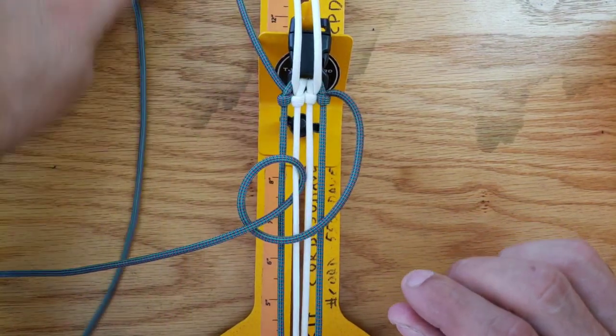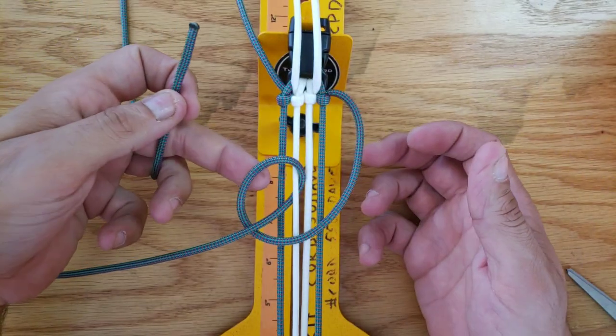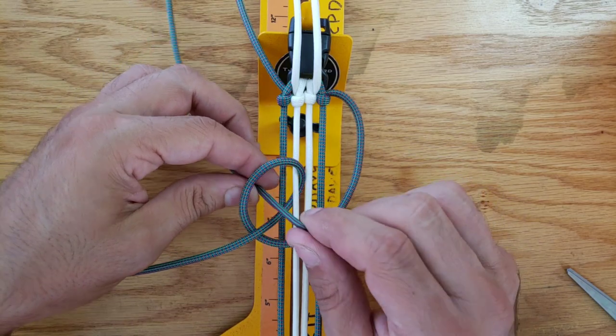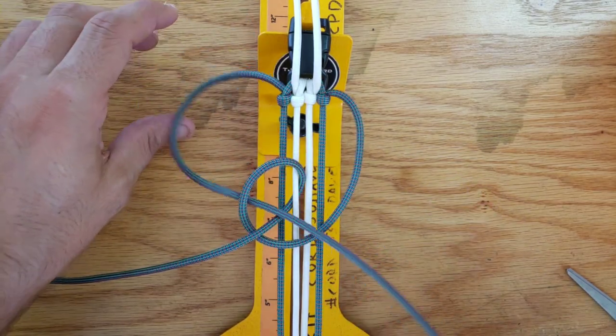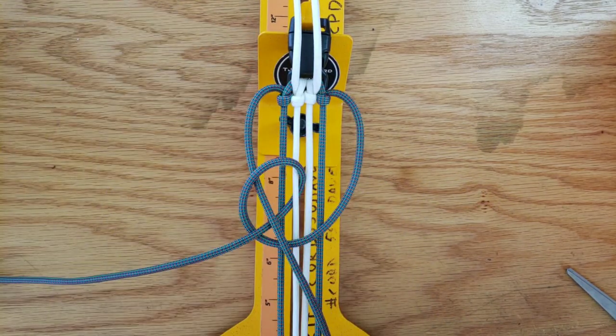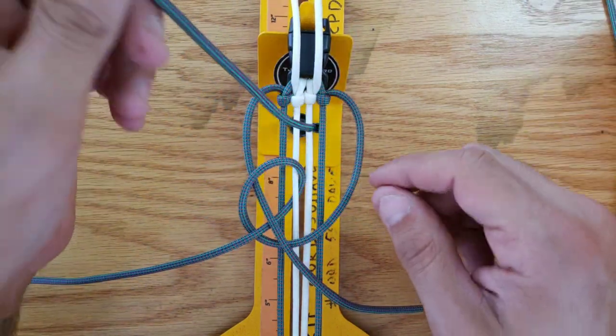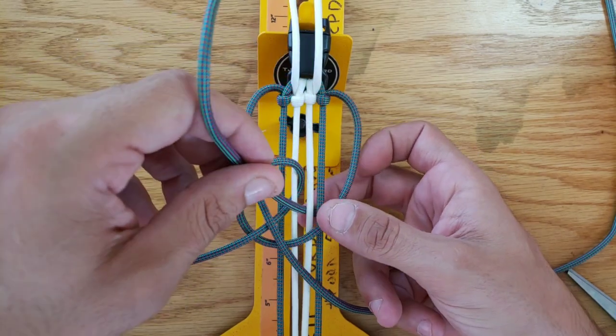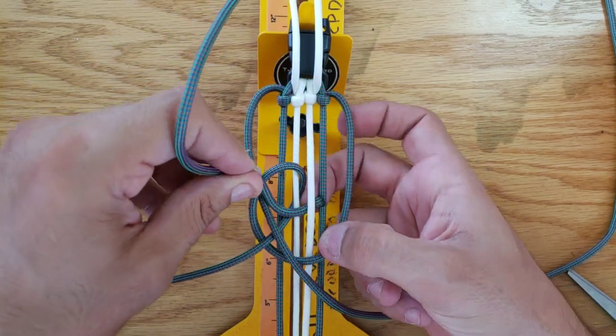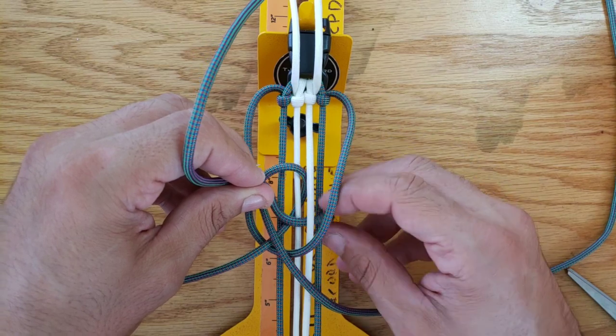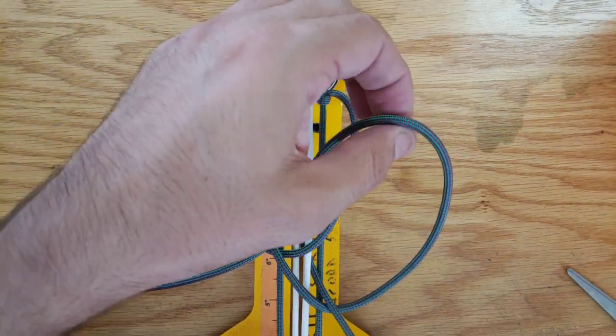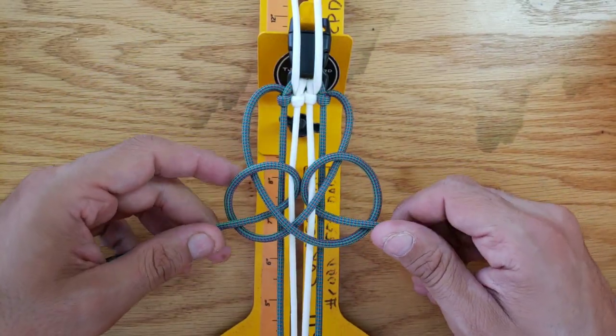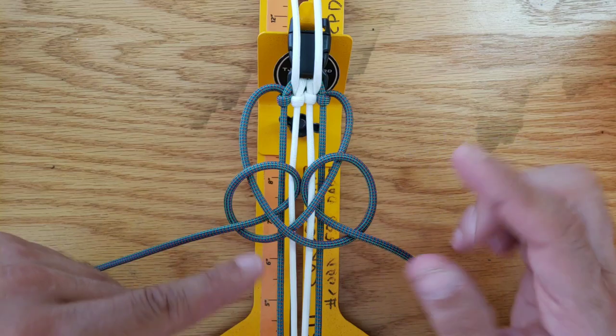Next, take your second cord, the one from the left, and come up underneath the loop that you just created. Do the same thing on the opposite side. Bring your cord down between cords three and four, two and three, and right back up between cords three and four, making sure you're doing the same thing like a pretzel, as you can see here.